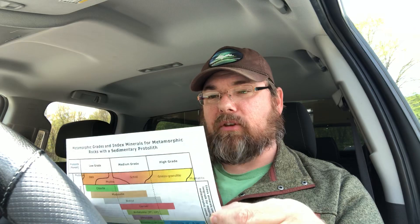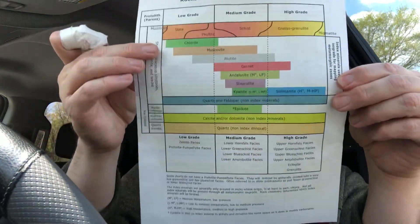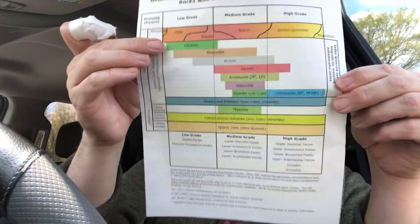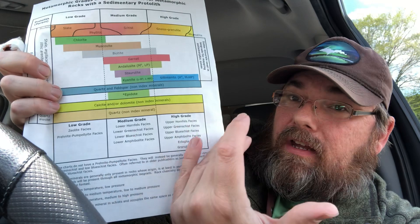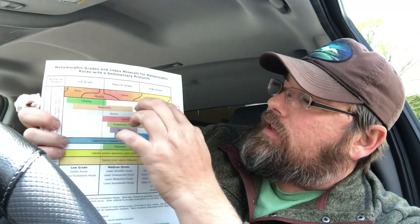That has to do with the chemistry, and that's why we use mudstones — they have the most abundant minerals. You can see here basically what happens through low, medium, and high grade metamorphism. I have the facies noted on a different chart; I'm not going to talk about that here — it's a talk for another time.